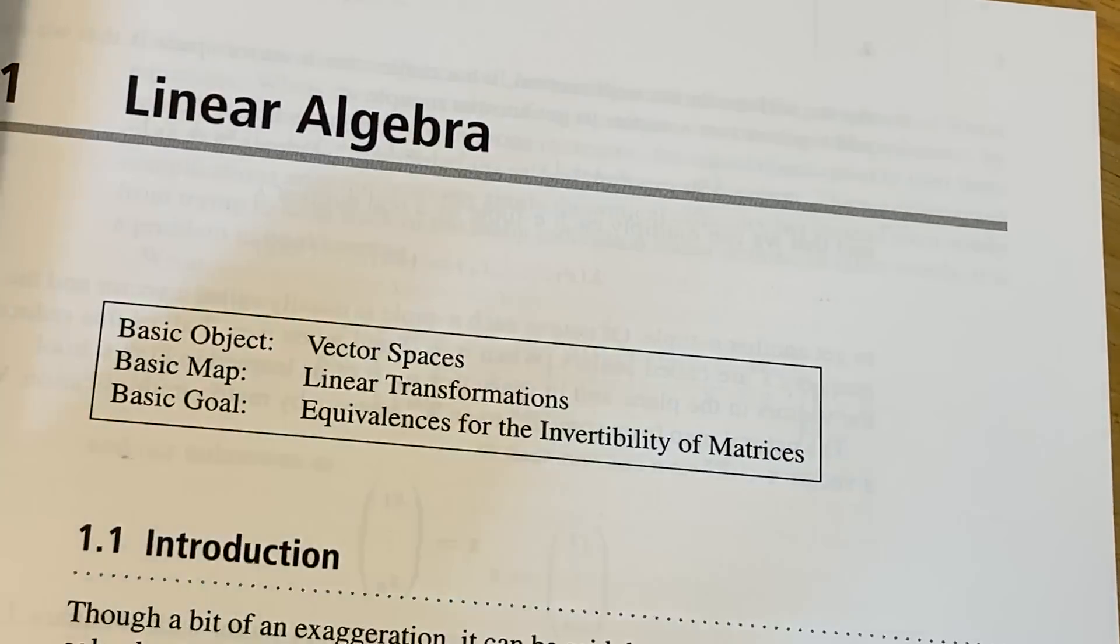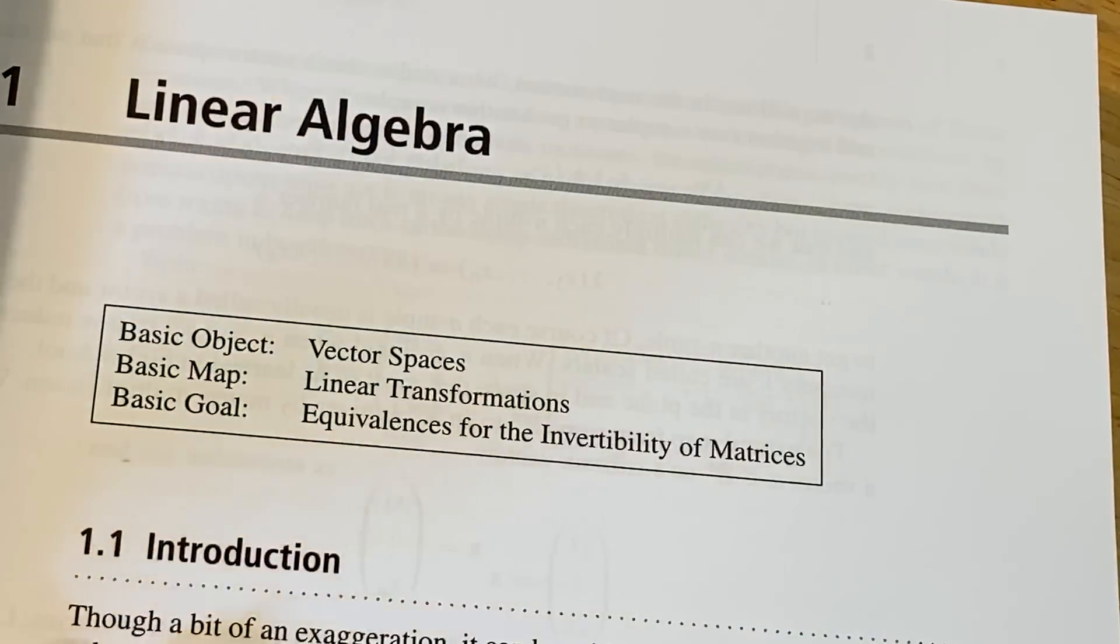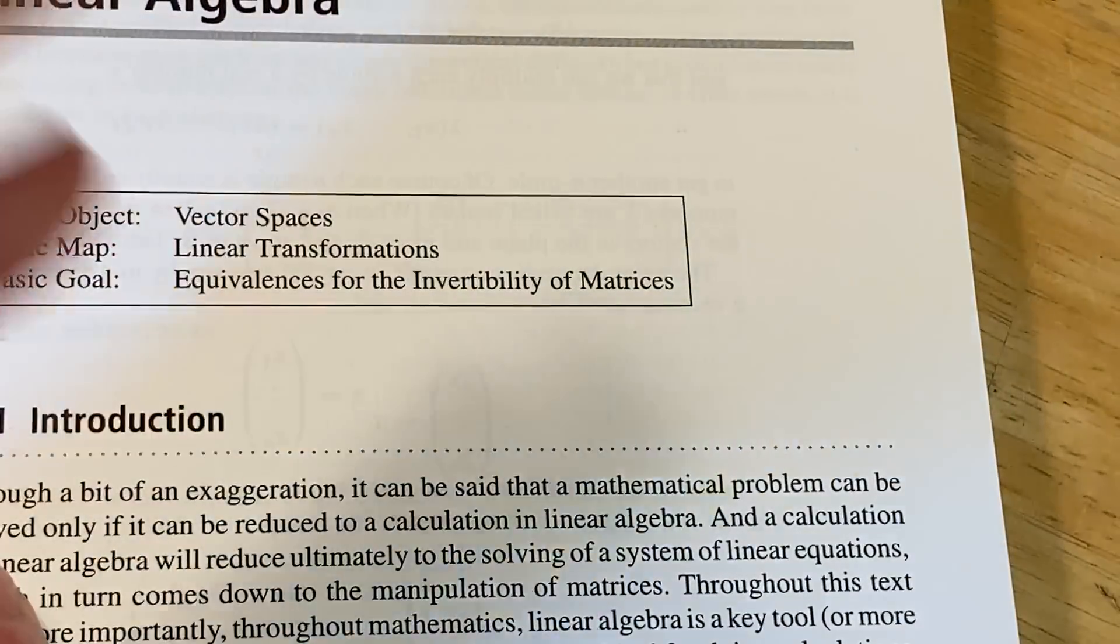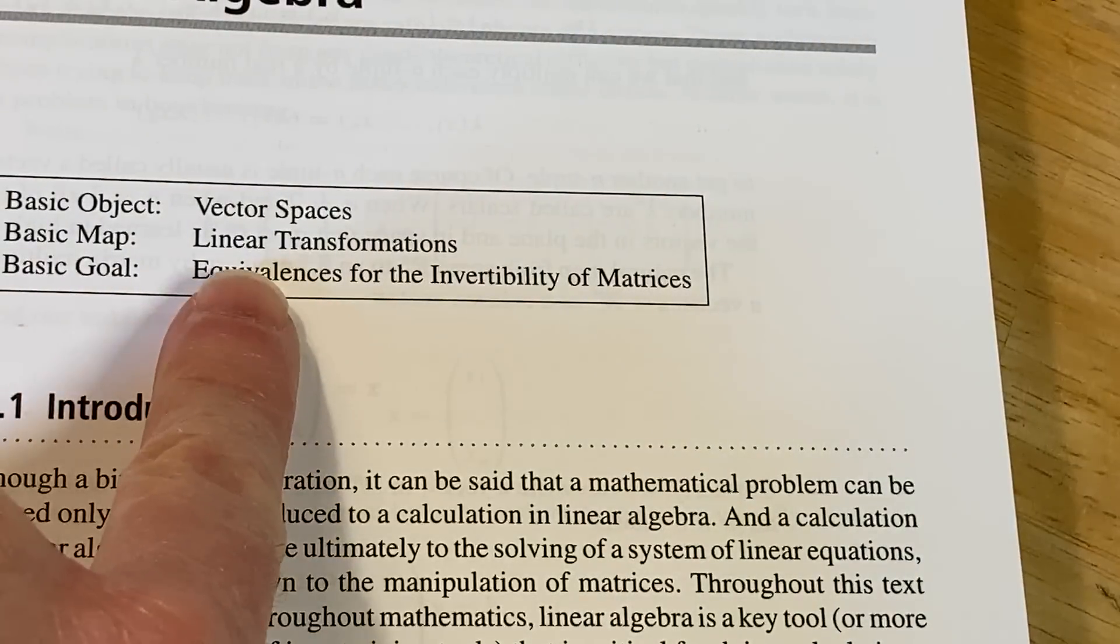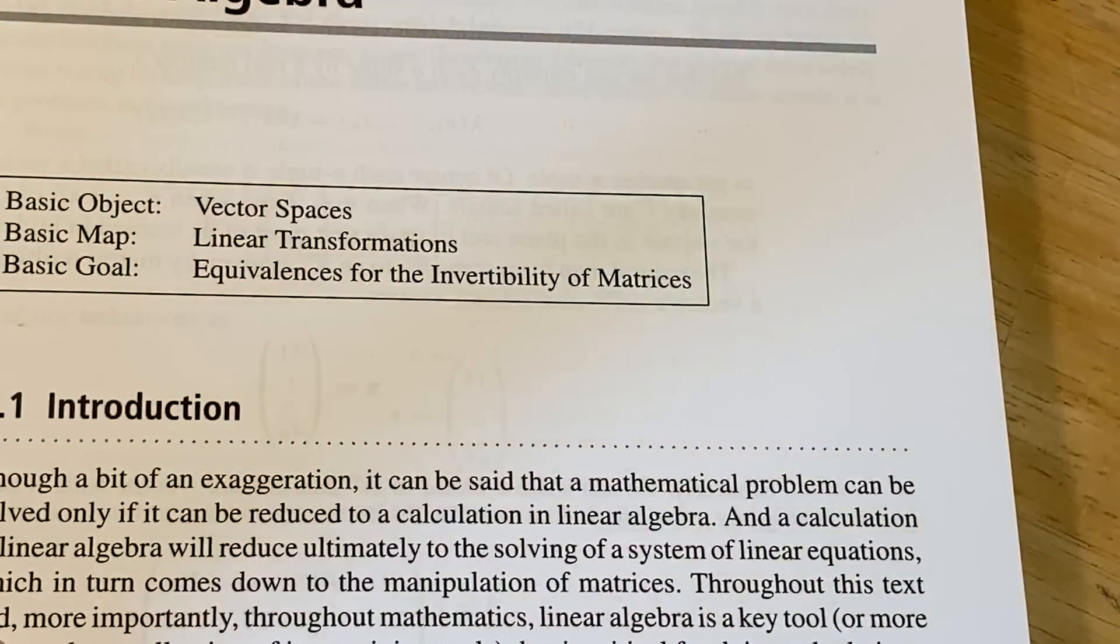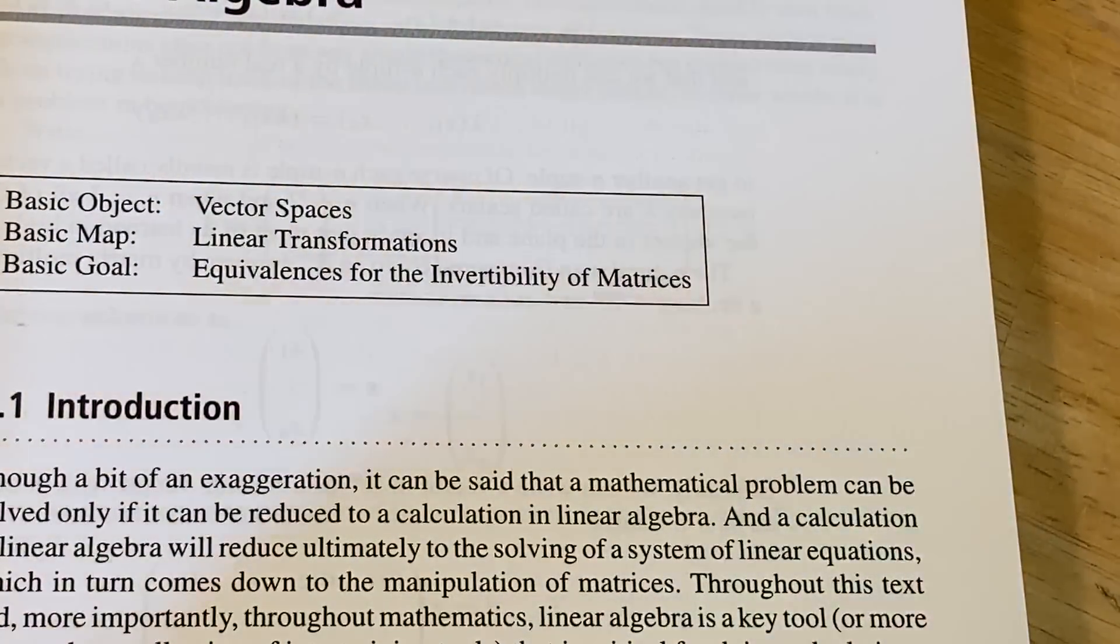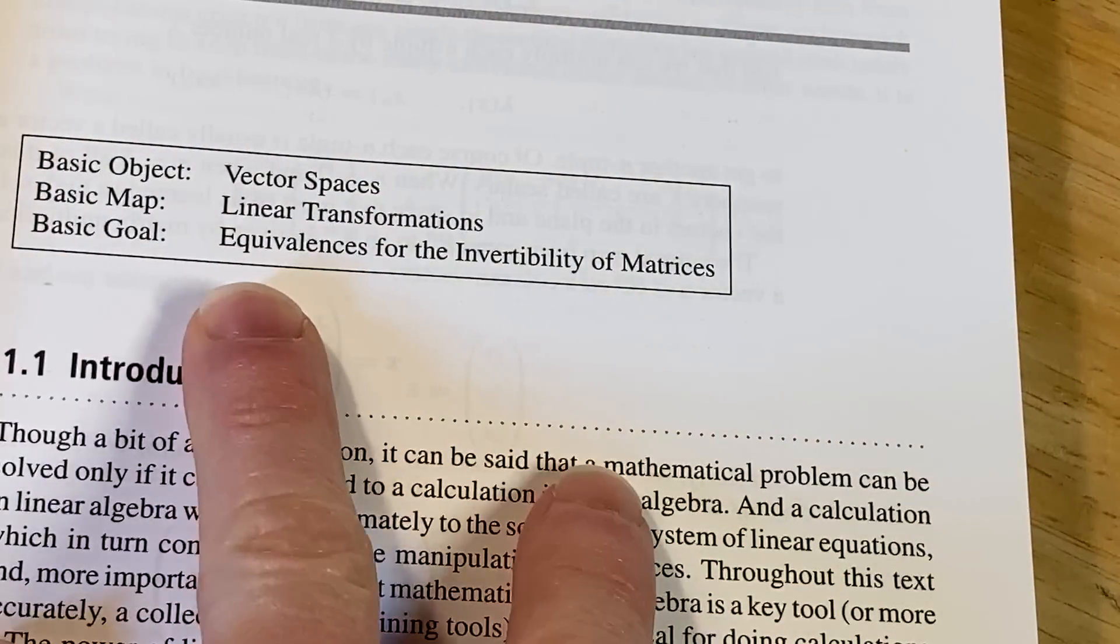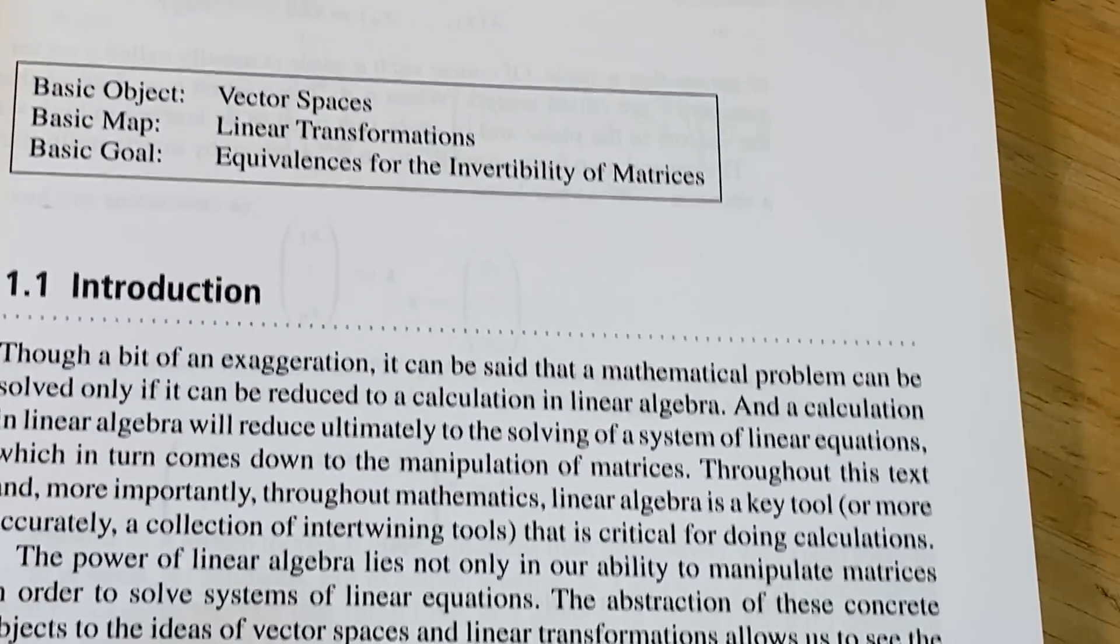So the basic object in linear algebra, that's going to be vector spaces. That's basically a set with some operations and some axioms. You have the vector space axioms, and that creates a vector space. The basic map is a linear transformation. Linear transformations, these are maps where the domain and co-domain are vector spaces, and they satisfy a property, and that's what makes them linear transformations. There's a definition. Equivalences for the invertibility of matrices. That's the basic goal.